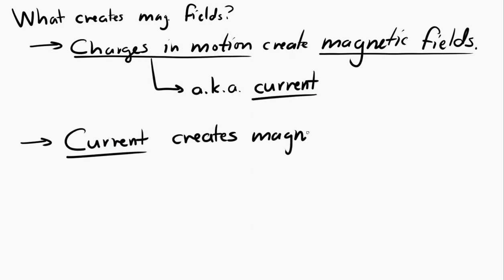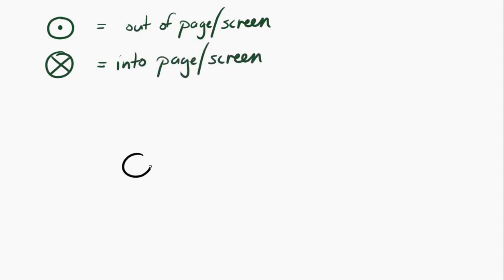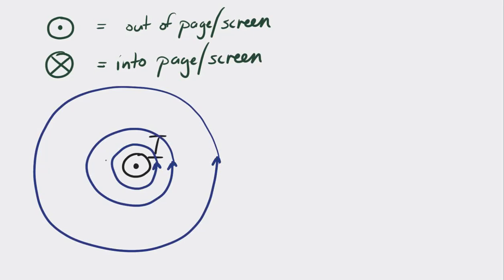How are the current and the magnetic field related? I'm going to draw a diagram using a couple of symbols you might not be familiar with. The circle with a dot means directed out of the page, and the circle with a cross means directed into the page. So if the current is directed out of the page — imagine a wire coming out of the screen directly toward you — the magnetic field around that wire goes counterclockwise. The magnetic field lines get further apart the further away from the wire, so the magnetic field is weaker further away from the wire.